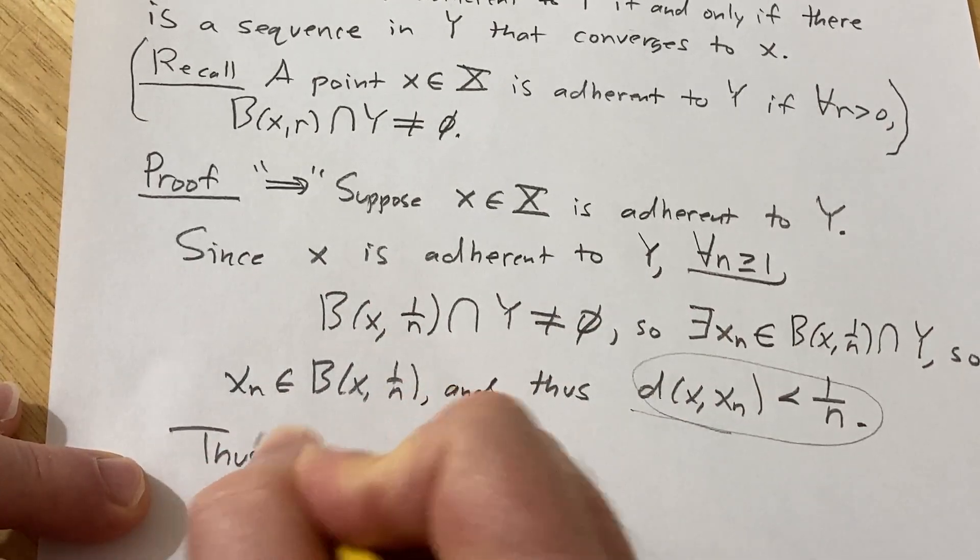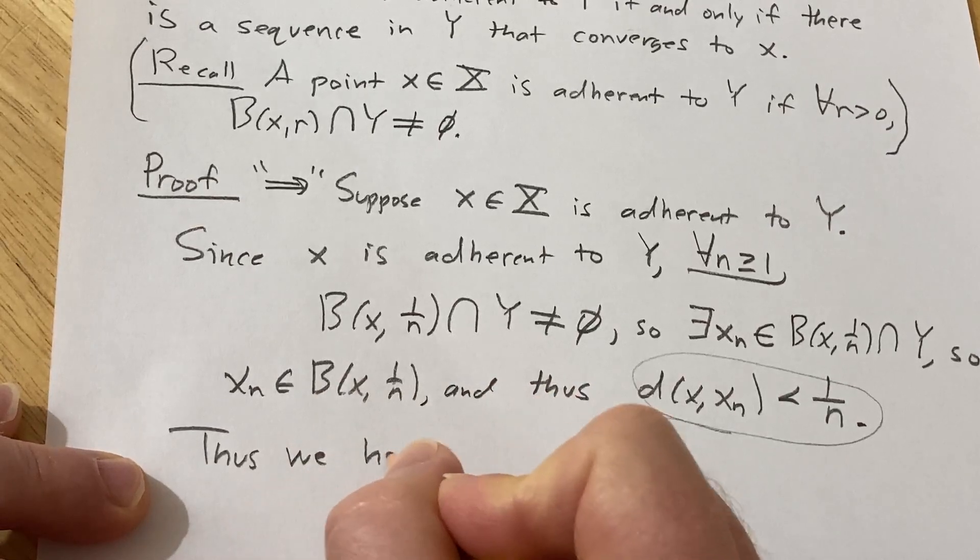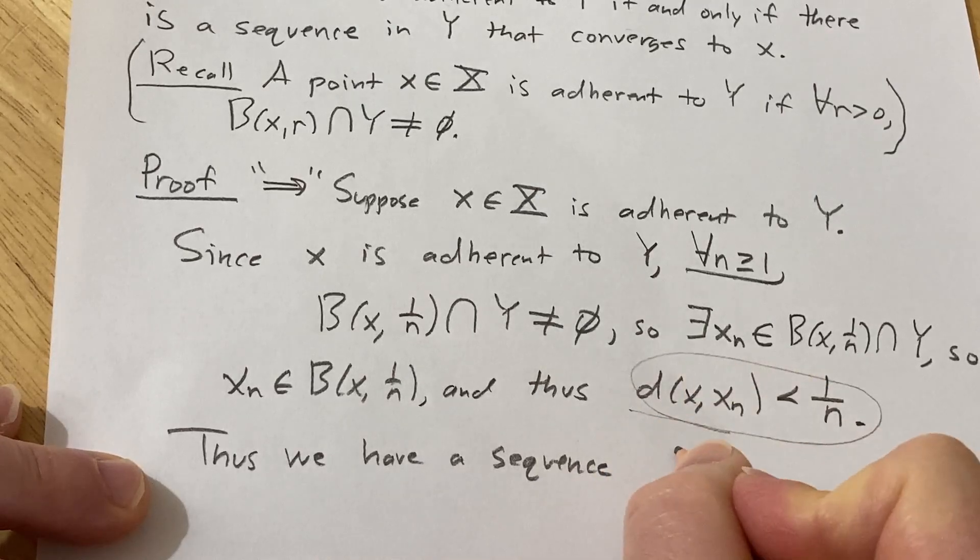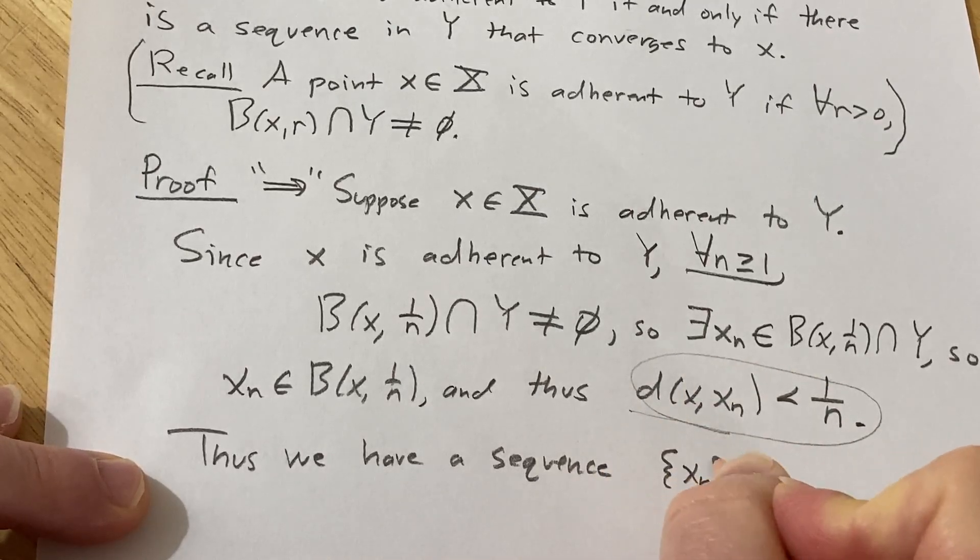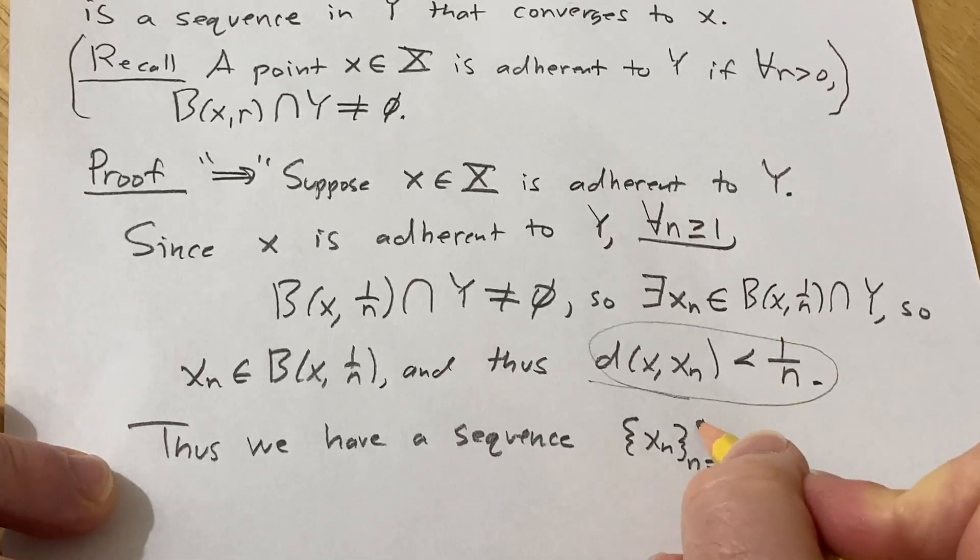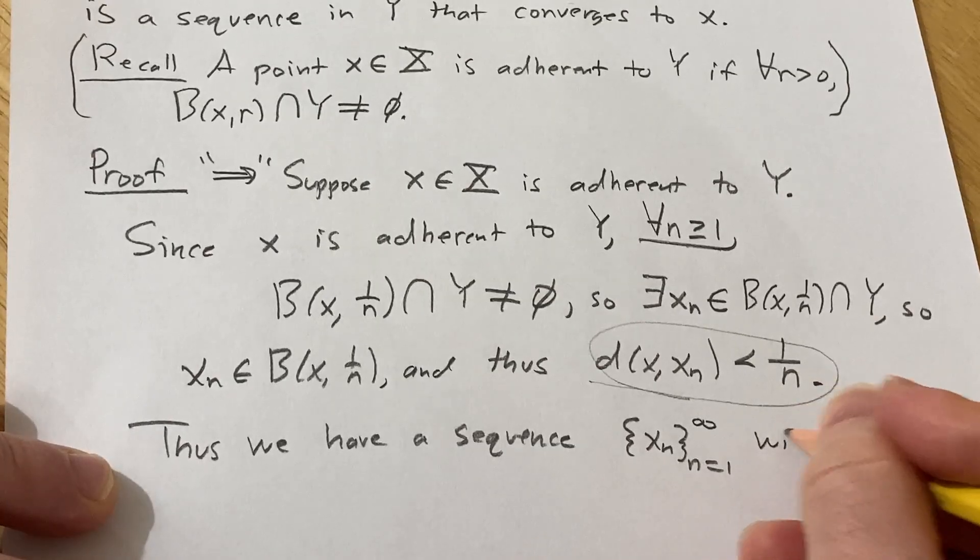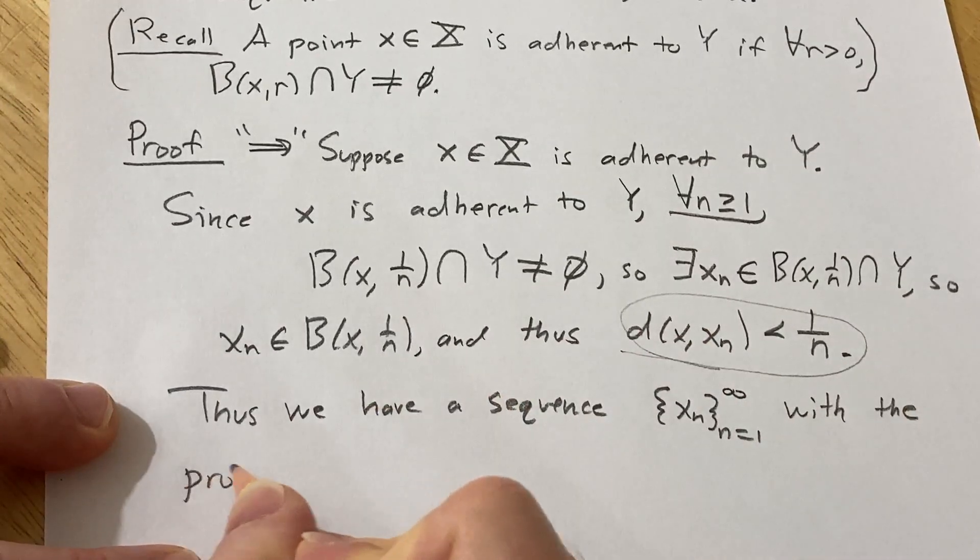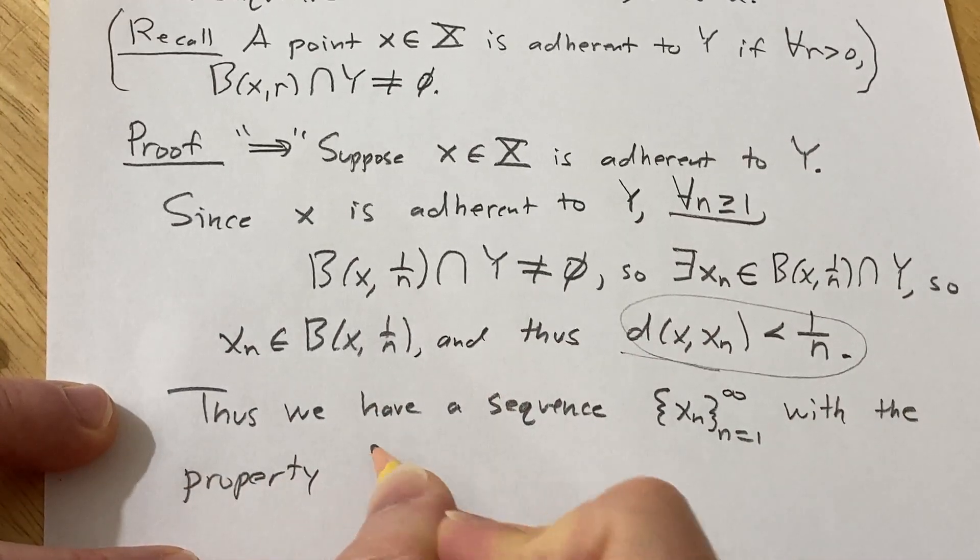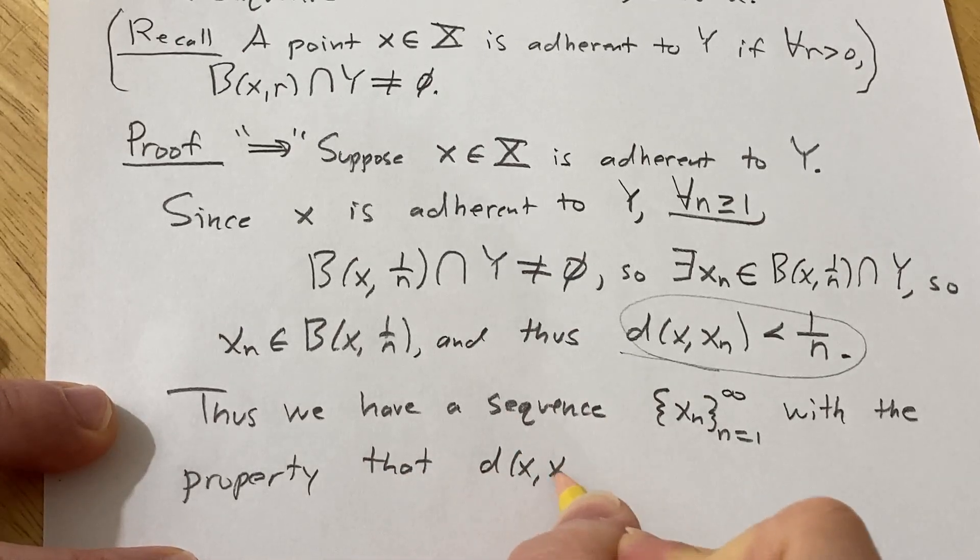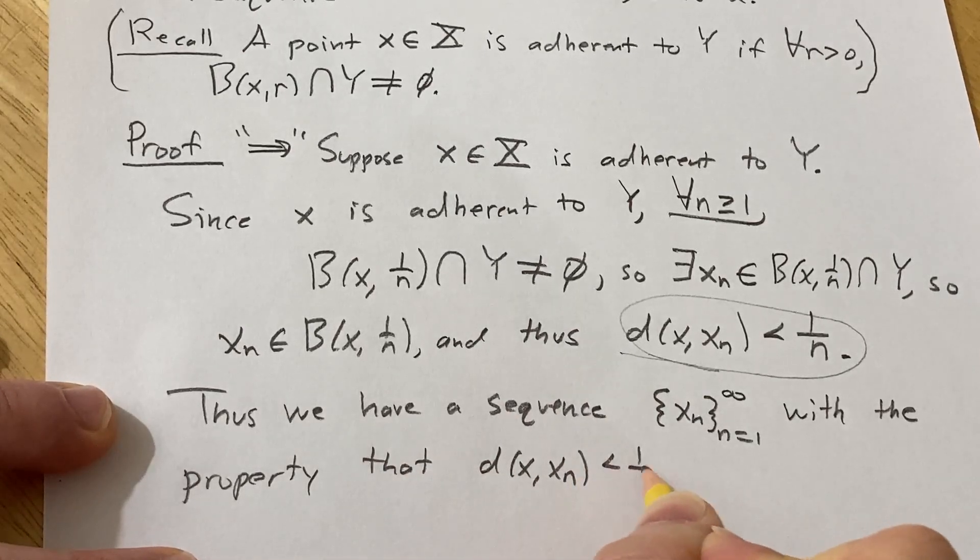So for each N greater than or equal to 1, we have a sequence whose terms are labeled x sub N that satisfy this condition. So let's just reiterate that. Thus, we have a sequence x sub N, and let's just emphasize that it works for each N. So it runs from 1 to infinity with the property that the distance between x and x sub N is less than 1 over N.